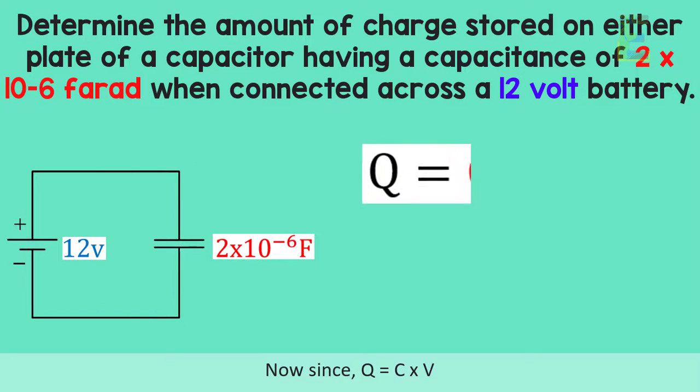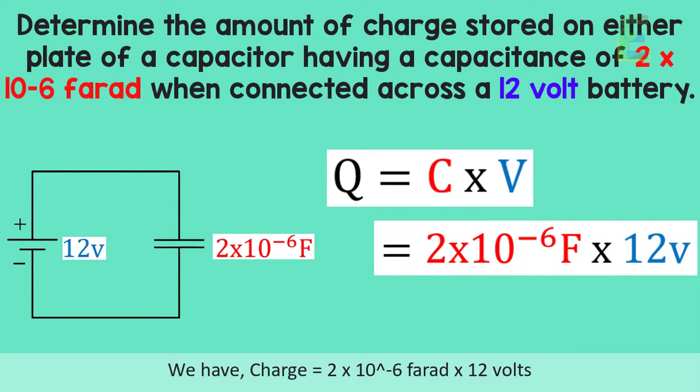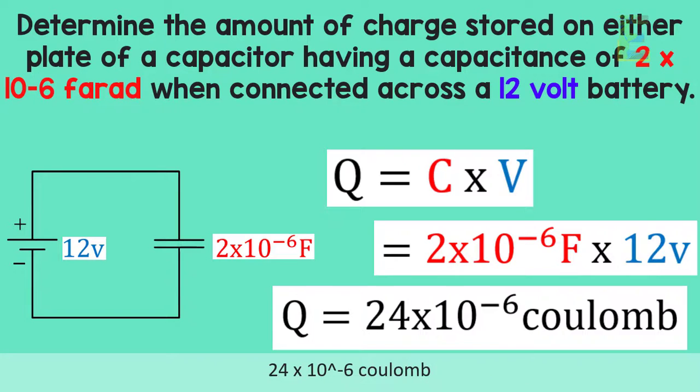Now since charge is equal to capacitance times voltage, we have charge is equal to 2 times 10 to the negative 6 farad times 12 volts, which gives us the final answer of 24 times 10 to the negative 6 coulomb.